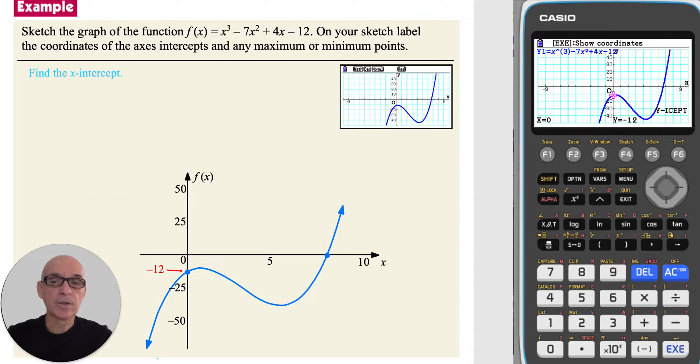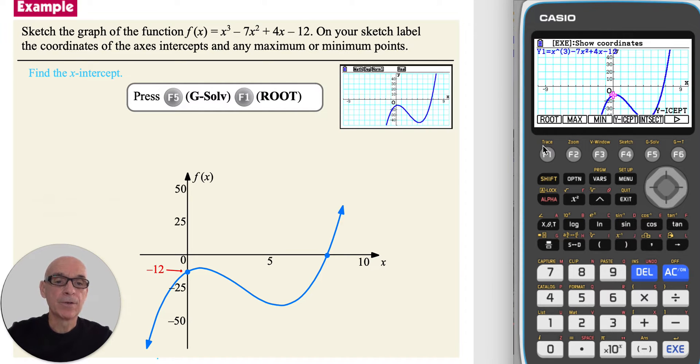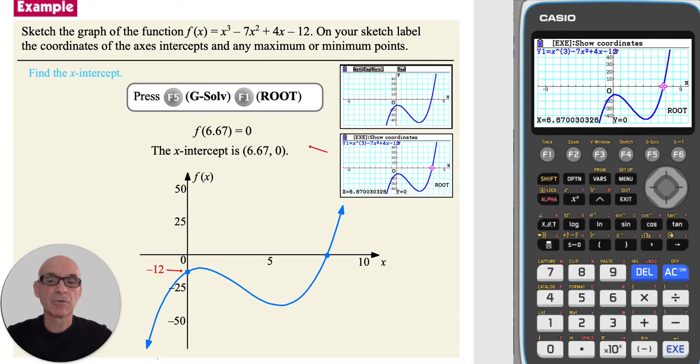To find the coordinates of the x-intercept, press f5 for g solve, and then f1 for root, giving the x-intercept and adding the x-intercept to the sketch.